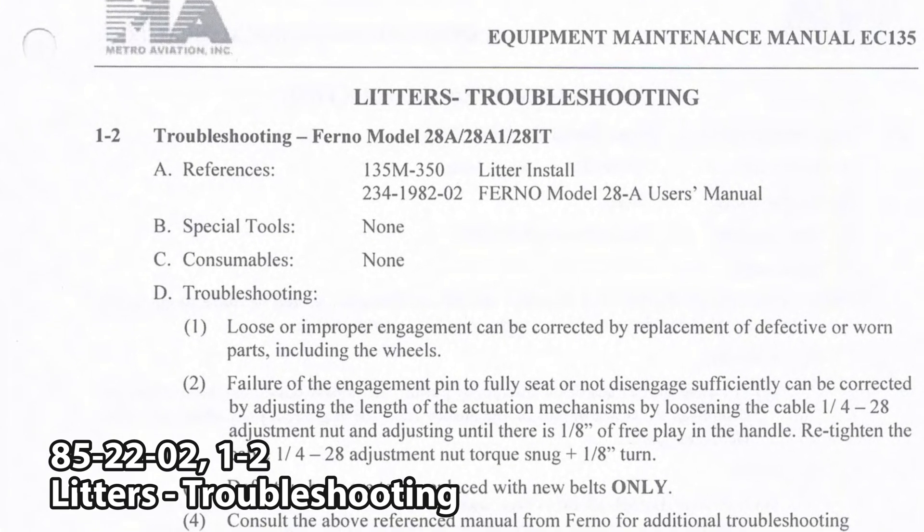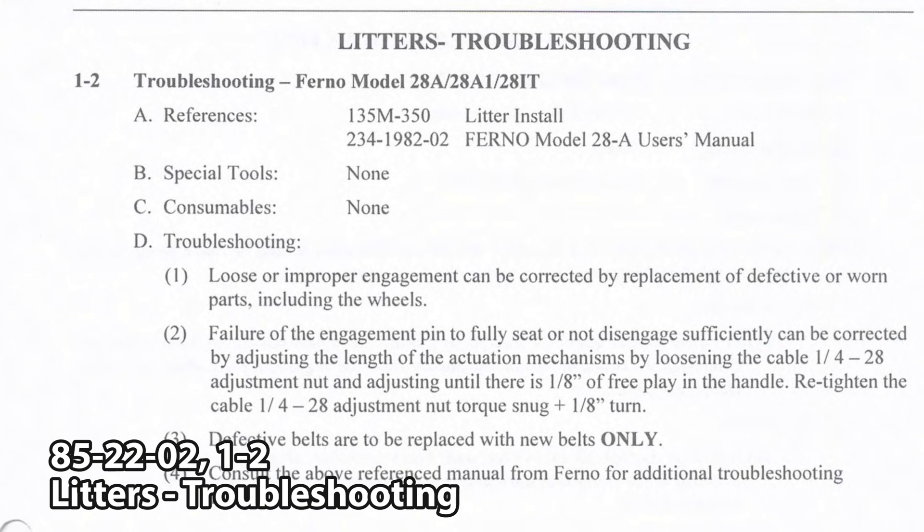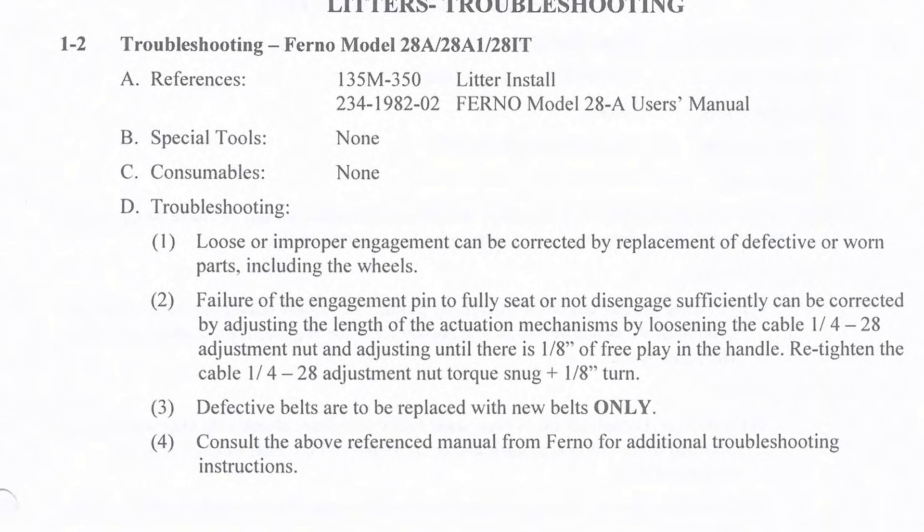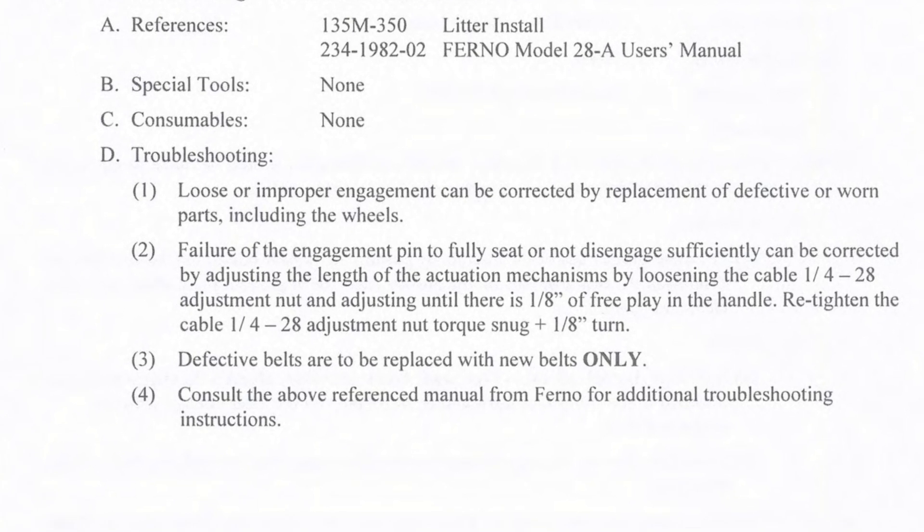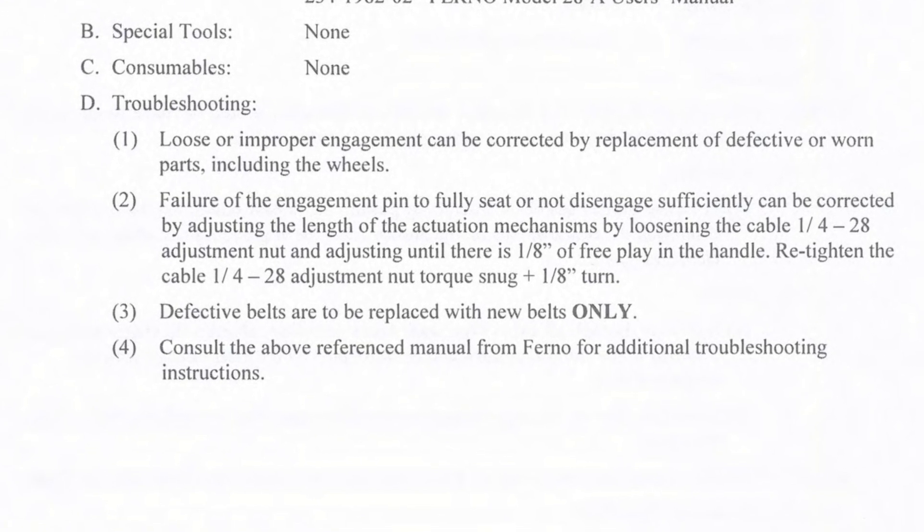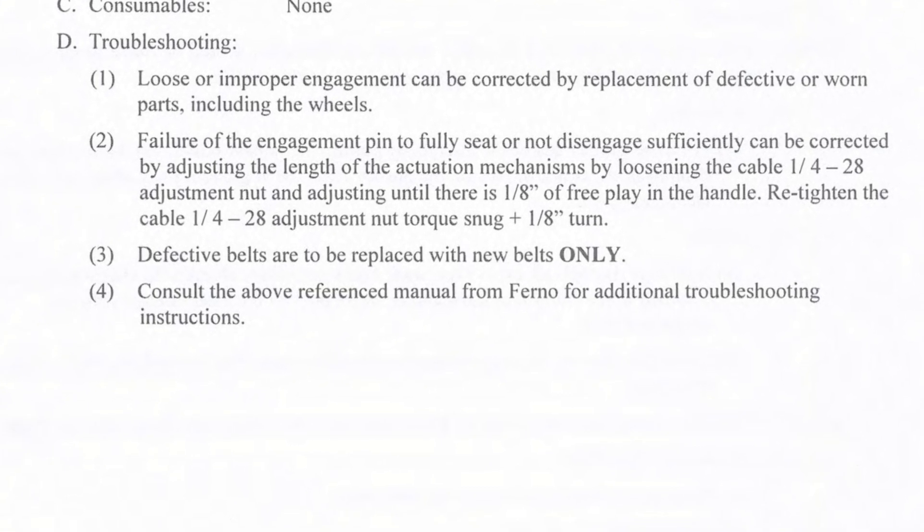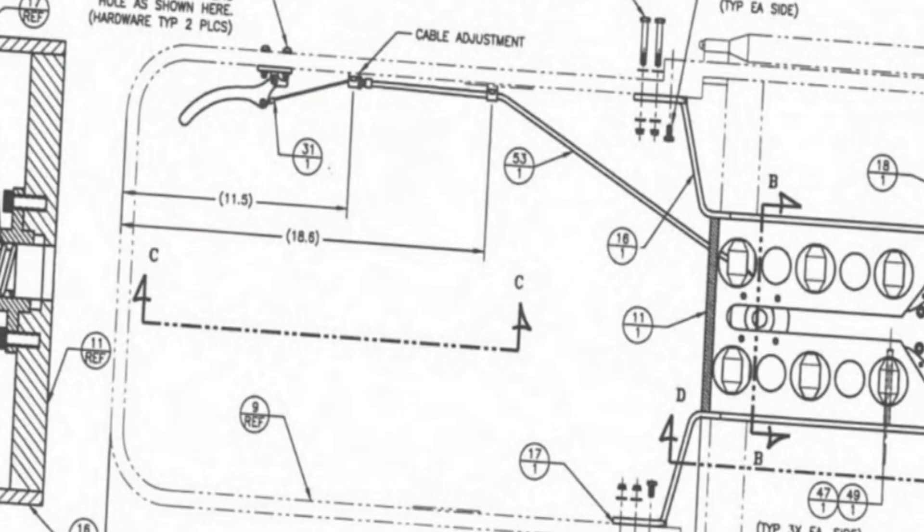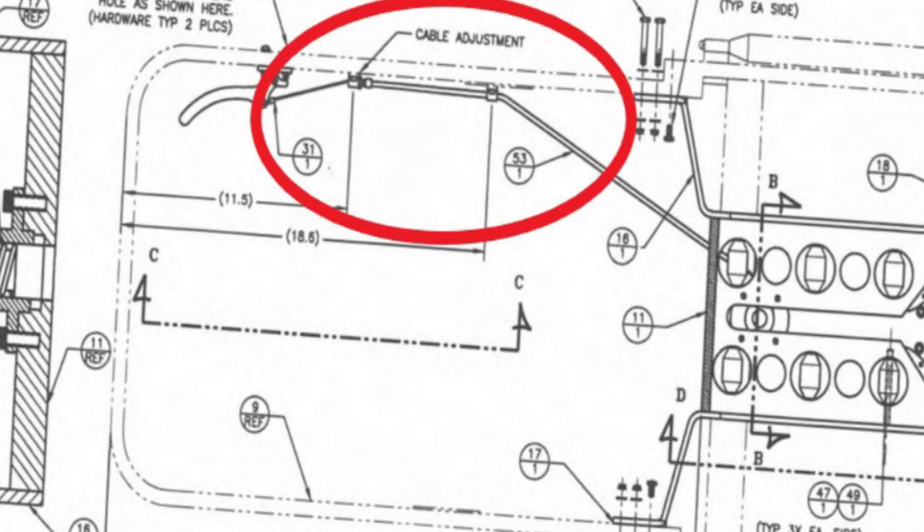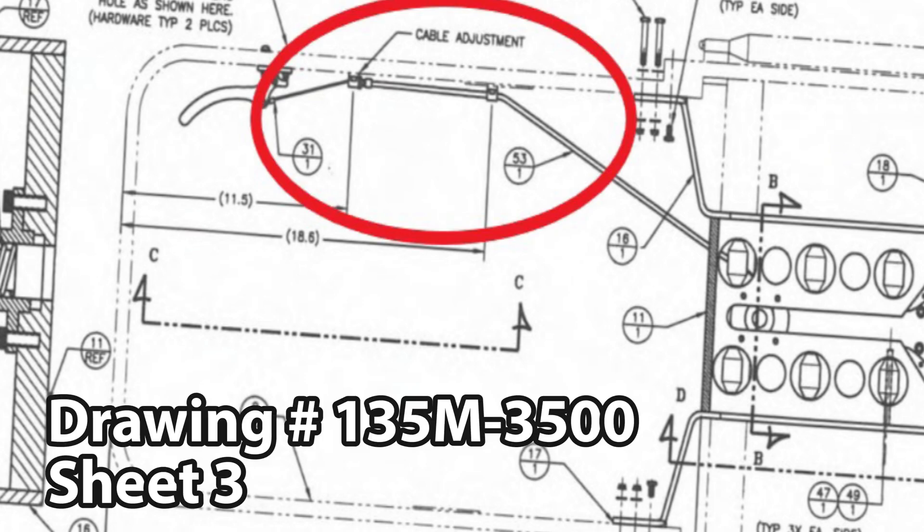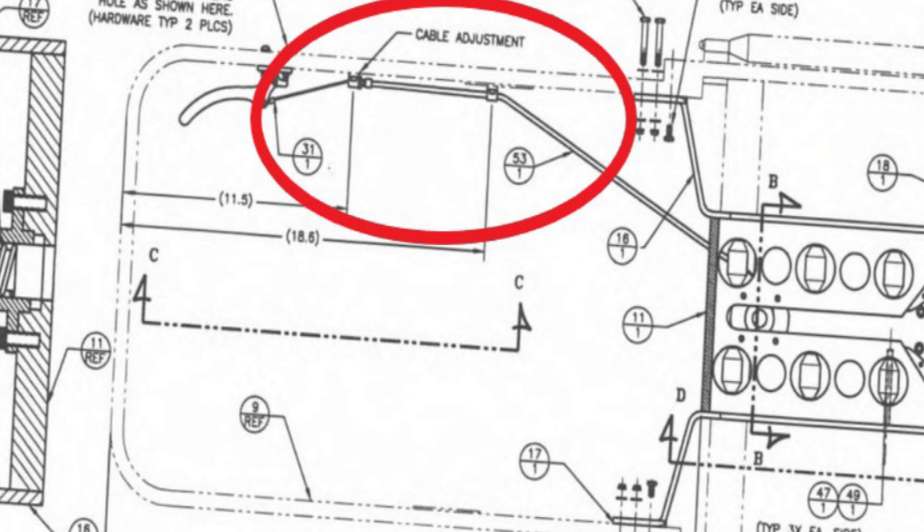Chapter 85-22-02, paragraph 1-2. This is the troubleshooting for the litter install. Failure of the engagement pin to fully seat or not disengage sufficiently can be corrected by adjusting the length of the actuation mechanism by loosening the cable adjustment nut and adjusting until there's an eighth inch of free play in the handle and retightening the cable. I can't find anywhere in Metro's manual on where to replace this cable, but on their drawing, number 135M-3500, I'm sure this is proprietary, so I'm just going to zoom into the cable. All it says is cable adjustment and it gives you the part number.